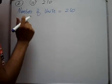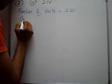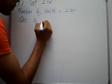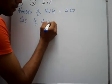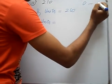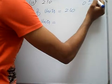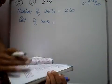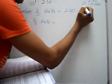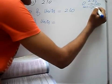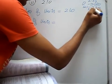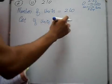Cost of units. 0 to 100 units: rate is 2.65. 101 to 300: rate is 3.64.